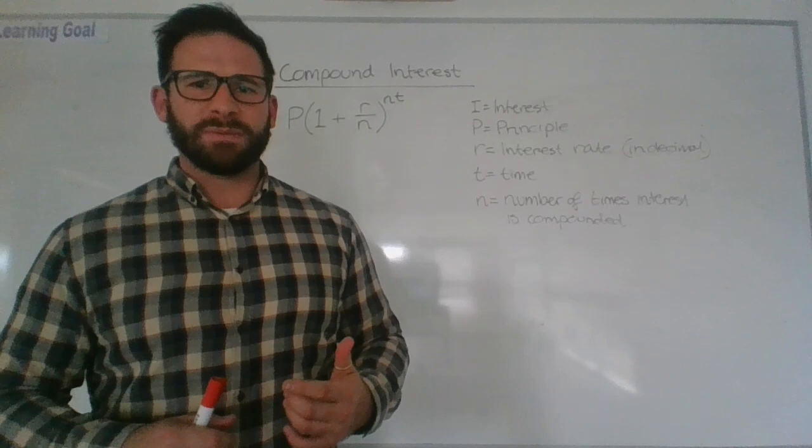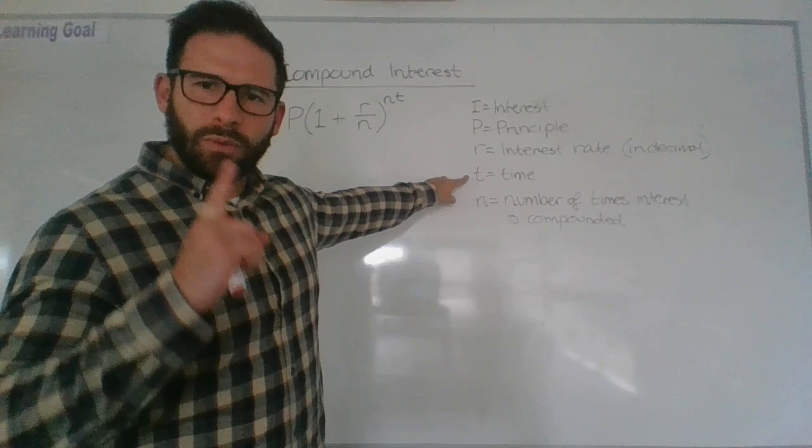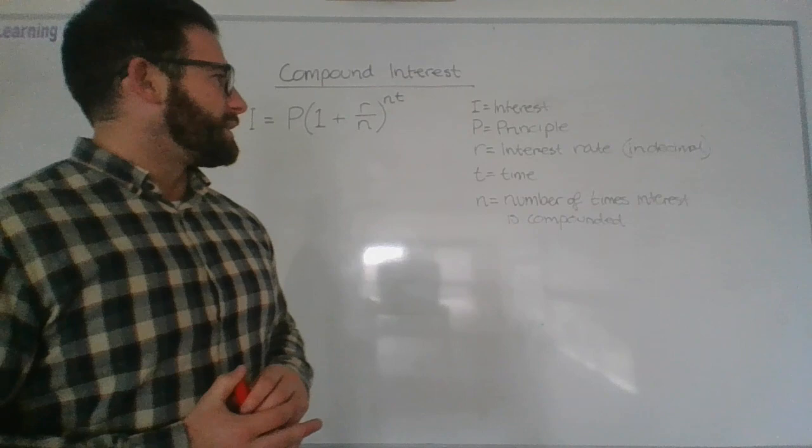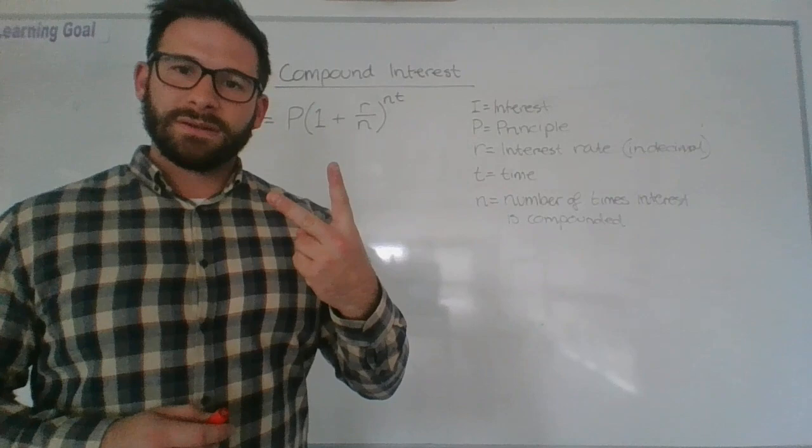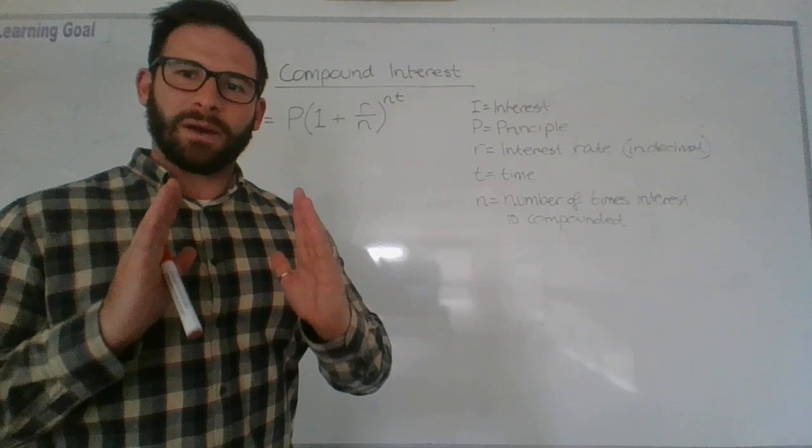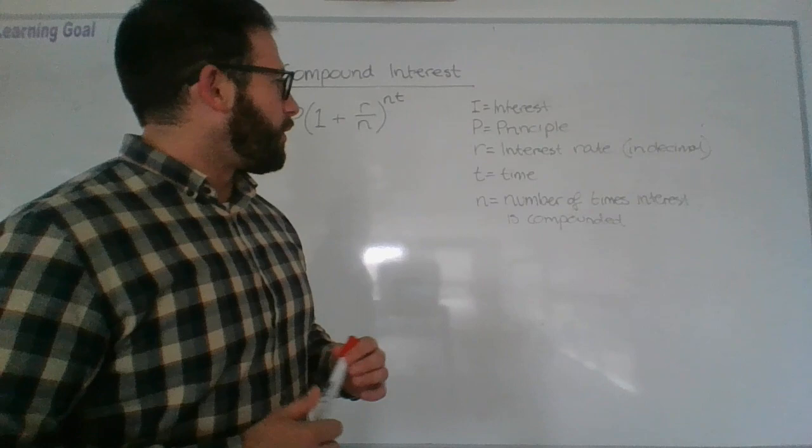If it compounds 12 times per year and I have a loan for one year, my T would be one year, my n the number of times it compounds would be 12 because there's 12 months in one year. Say for example if I said it compounded every six months and I have my loan for two years, the time would be two and the n number of times interest is compounded per year, every six months, six months and six months make up one year, so be two.